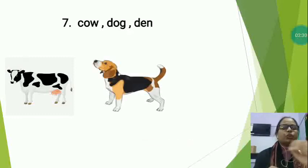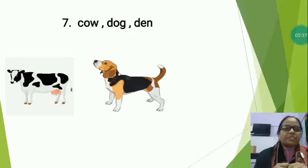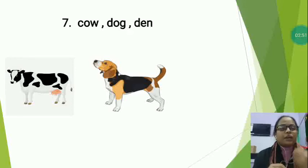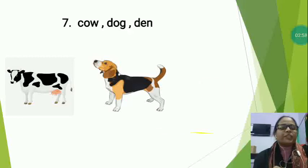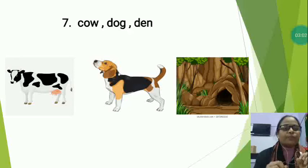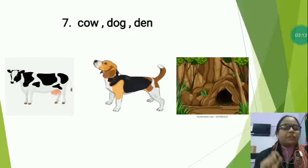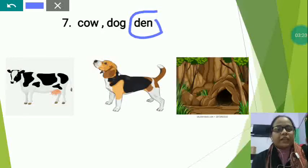Now this is dog. Dog is a very faithful animal and also a domestic animal. Dog guards our house and protects us from theft. It eats flesh and fish, and its favorite is bone. Now this is den — the home of lion. So now which one is the different? Cow and dog are both domestic animals, but den is the home of lion. So we will circle den — den is the different.